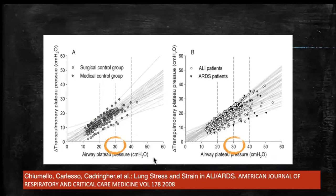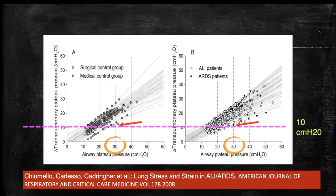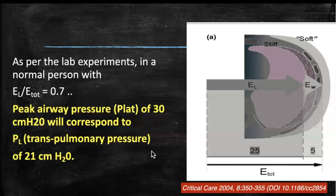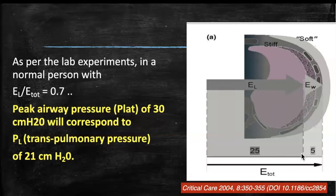Chimula et al described that an elevated plateau pressure of 30 corresponded to a trans-pulmonary pressure of as low as 10 to as high as 28 centimeters of water. In a 2004 paper, Grishwani-Gatunani also showed that with normal chest wall compliance and a lung elastance to total elastance ratio of 0.7, when you apply a plateau pressure of 30, approximately 25 centimeters is used opening the lungs and only 5 in expanding the chest wall, giving a trans-pulmonary pressure of around 21–22.